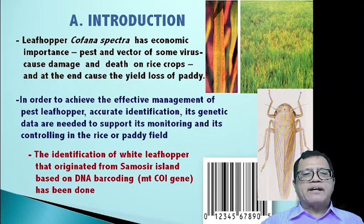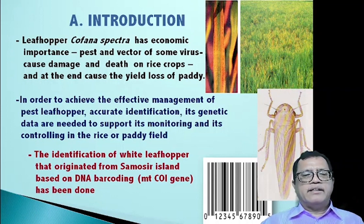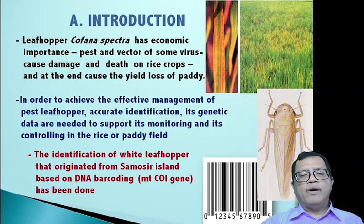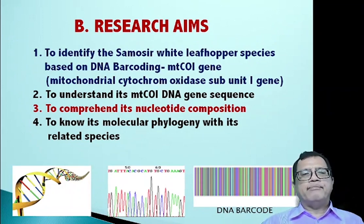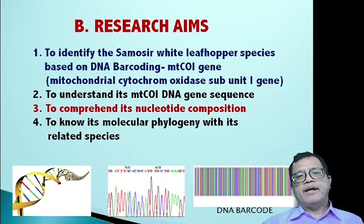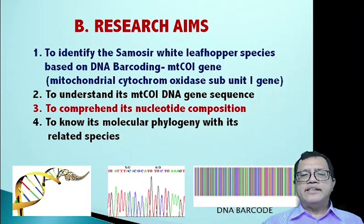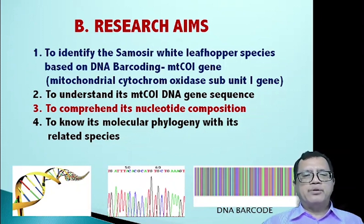Based on the background of this research, the investigation regarding the identification of white leafhopper that originated from Samosir Island based on DNA barcoding, MTC01 gene, has been done. The aims of this research are: first, to identify the Samosir white leafhopper based on DNA barcoding MTC01 gene; second, to understand its MTC01 DNA gene sequence; third, to comprehend its nucleotide composition; and last, to know its molecular phylogeny with related species.